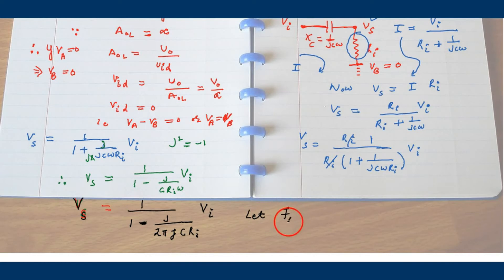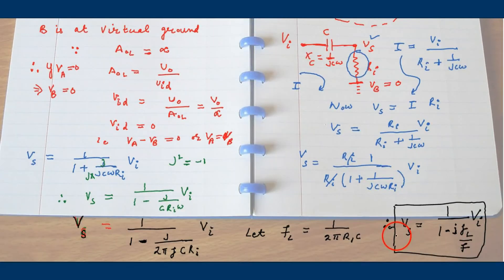Omega is 2 pi f. So substituting the value of omega here, 1 over 2 pi RC. Now let me define the lower cutoff frequency, 1 over 2 pi RC. The dimension wise the relation is same. So substituting the value of fl there, this is the relation between Vs and VI.